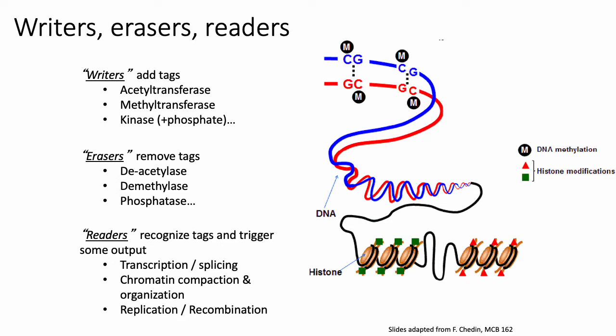Some epigenetic marks like DNA methylation are heritable, meaning they get passed between parent and progeny. So they need to be able to be read and recognized during DNA replication.